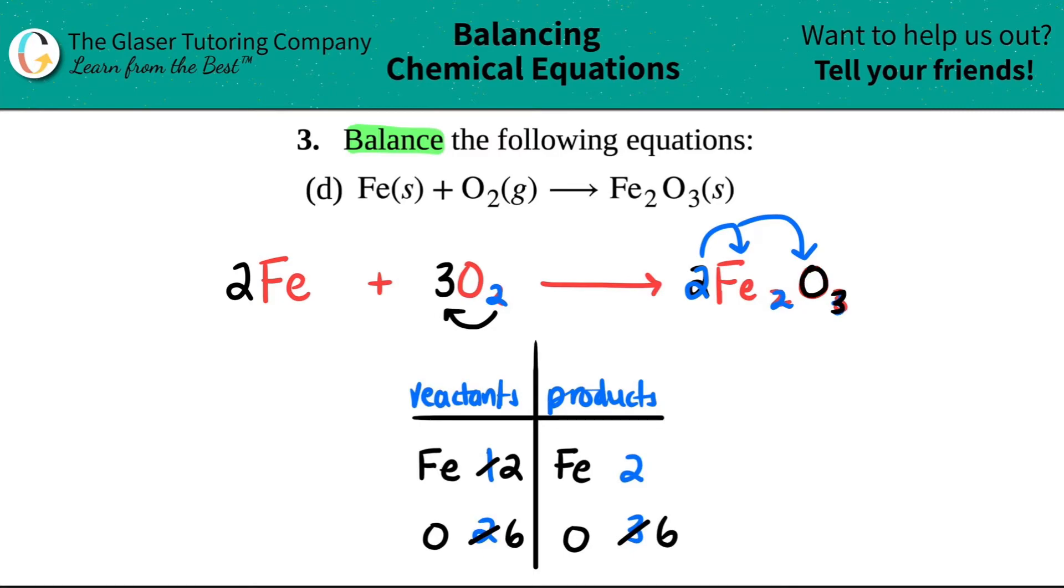So I did it for the oxygen, but there is an iron, an Fe, in the same compound. There was two, but now there's a two being multiplied. So what's the new number for the iron on this side? It's not two. It's a two times two is four.